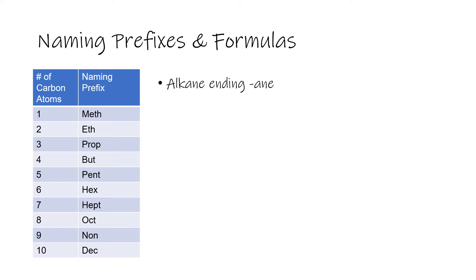This naming system is based on prefixes that tell you how many carbons are present. For one carbon the prefix is 'meth', for two carbons it's 'eth', 'prop' for three, 'but' for four, and once you get to five and beyond you use Greek prefixes — 'pent' meaning five, like a pentagon which has five sides. Those prefixes should be fairly familiar to you.